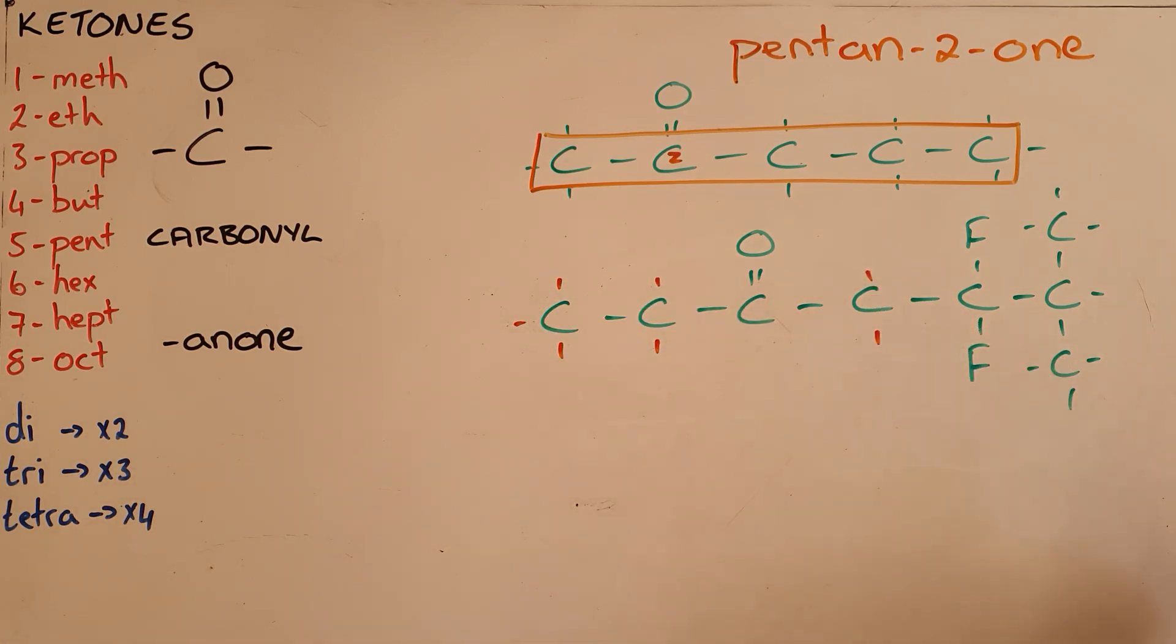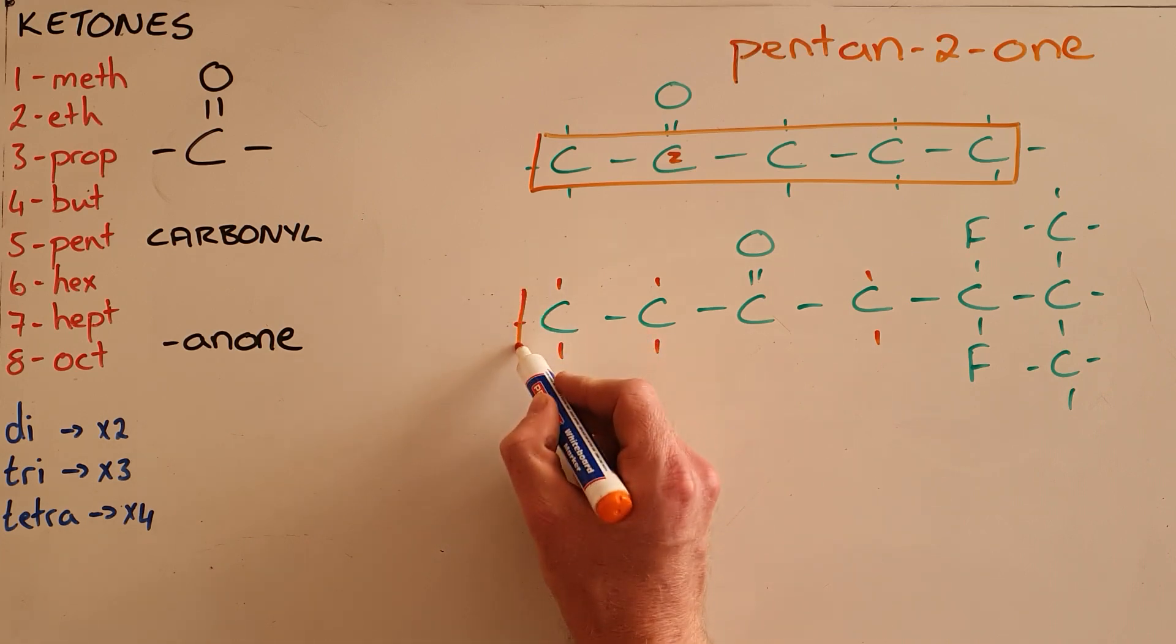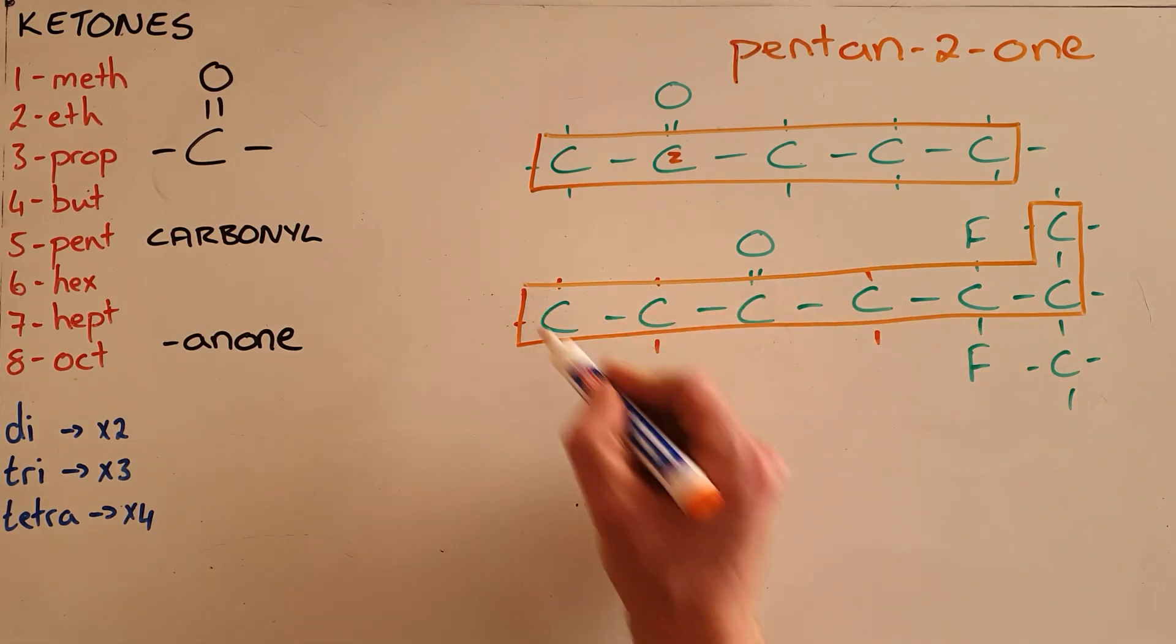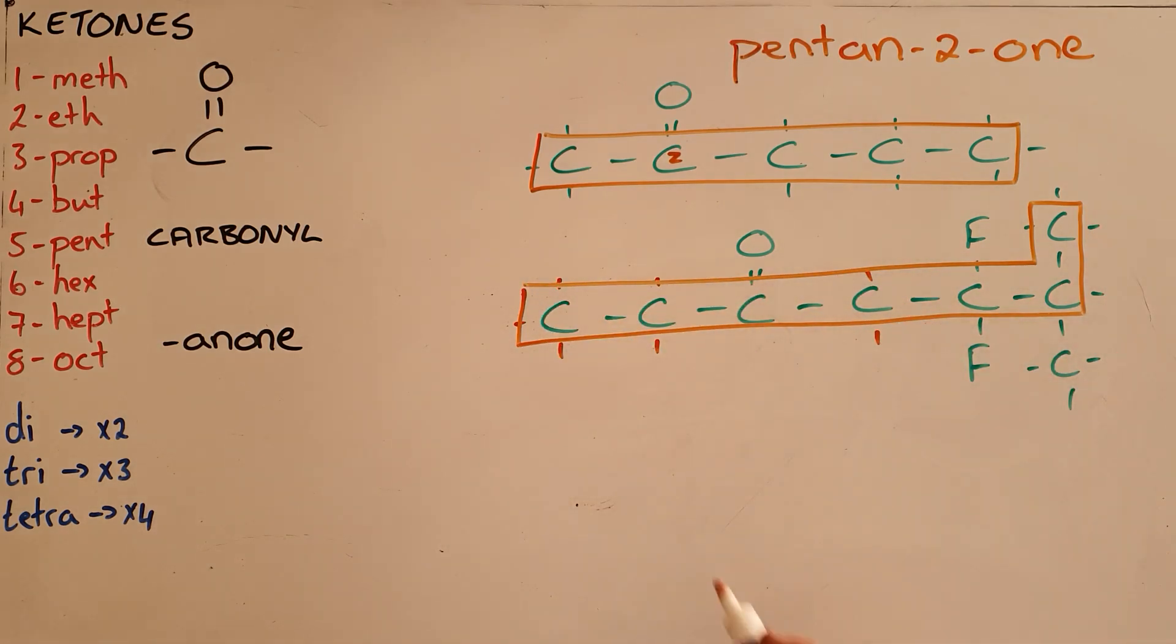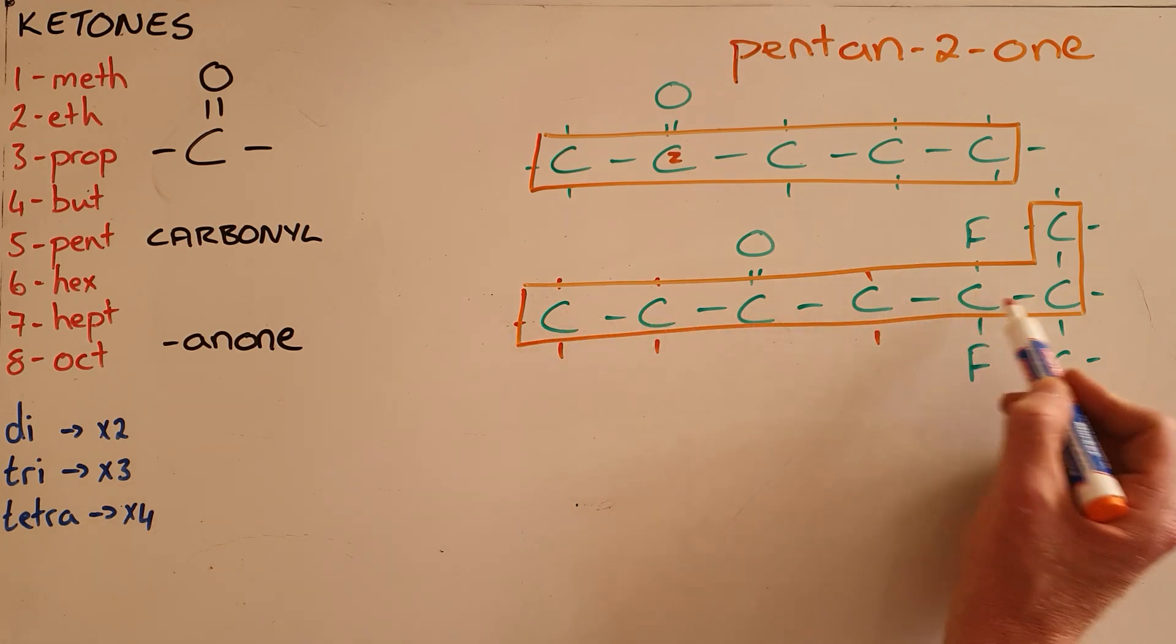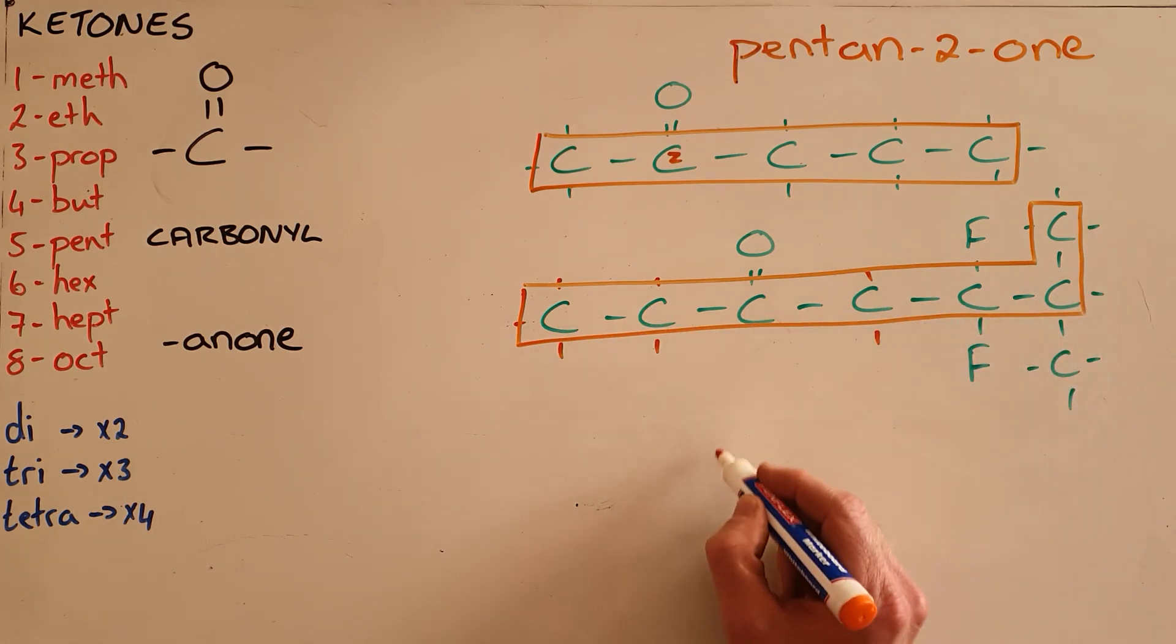We start once again by identifying the longest carbon chain that contains that functional group. Do not be confused by a bend in that chain. The longest chain here: meth, eth, prop, but, pent, hex, hept, so we know that this is heptanone.